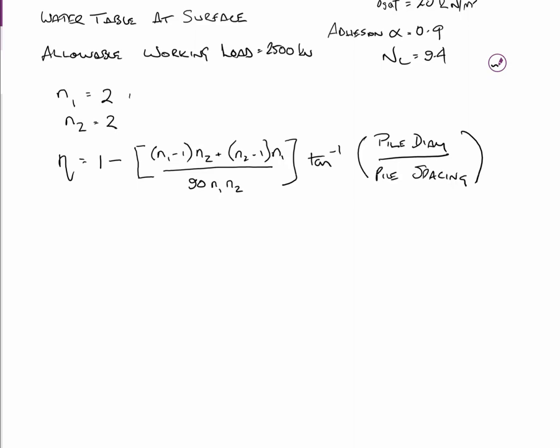And we need to calculate that as our first step. So N1 and N2 both equal 2, because there's 2 in the x direction, 2 in the y direction. And NETA equals 1 minus, a little bit convoluted but it's pretty simple math. It's (N1 minus 1) times N2 plus (N2 minus 1) times N1 all divided by 90 times N1 times N2 multiplied by tan to the minus 1, the pile diameter divided by the pile spacing.